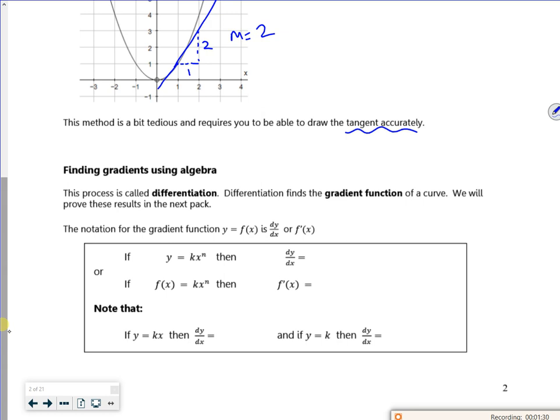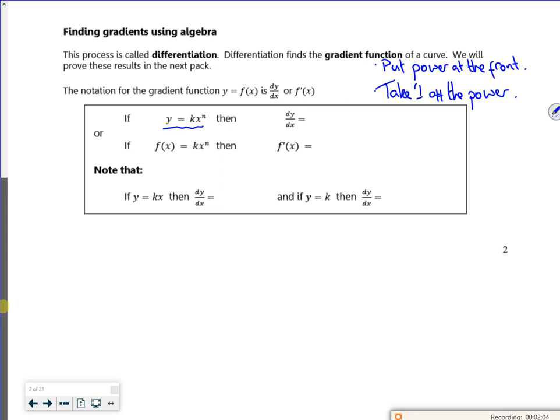Now, what we do is put the power at the front and take one off the power. So if you look at this example here, it says y equals kx to the n. So what I want to do is put the power down and take one off the power. k is just a number, so I can do kn times it together, then it's x to the power n minus 1.